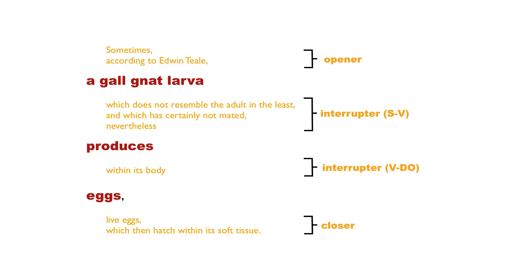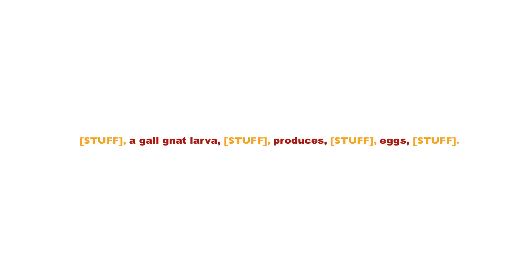Another way to look at the structure of this sentence would be to put it like this: stuff, a gall gnat larva, stuff, produces, stuff, eggs, stuff. All that stuff is modification through phrases and clauses.